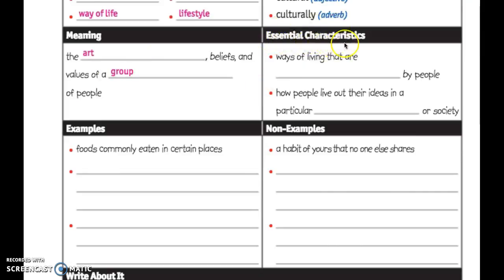Coming up here to essential characteristics, it says ways of living that are shared by people, or how people live out their ideas in a particular place or society. Cultures are usually attached to places. Here at Pinacate we have a certain culture. Maybe in your neighborhood or in Paris there's a culture you follow, and when you go visit family down in Mexico or someplace else, there might be different cultures because it's a different place.